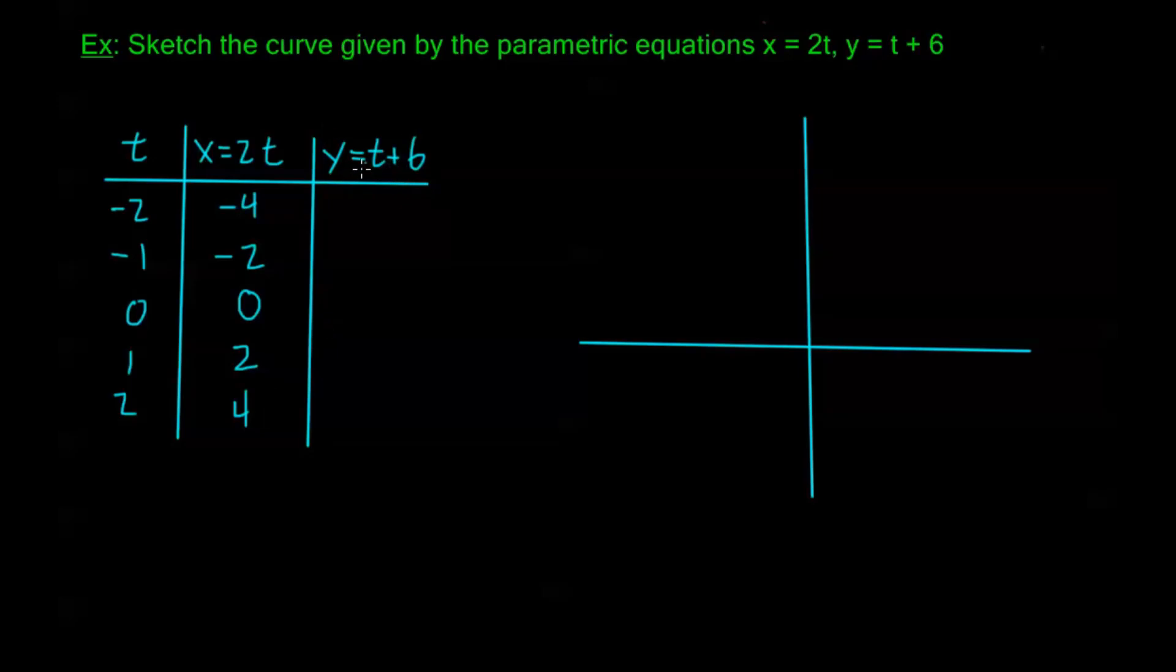Now the same thing for y. When I plug in negative 2, I get y, which is t plus 6, is going to be 4. I'll have negative 2 plus 6. Plugging in negative 1, I have 6 plus negative 1, or 5. And really we see as t increases by 1, y is increasing by 1 at the same time. So here I have my t's - t increasing by 1 means y is increasing by 1. So my next three are just 6, 7, and 8.